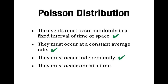Thirdly, cars will pass independently. If we're in the middle of nowhere, it's very unlikely that any cars will be travelling in convoy. So if one car goes past, there's no reason to think that another car is about to go past. This means we can tick the third criterion. And finally, the cars will go past one at a time, so we can tick the fourth criterion. In this case, the random variable will have a Poisson distribution.